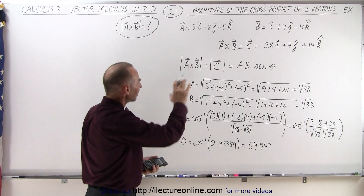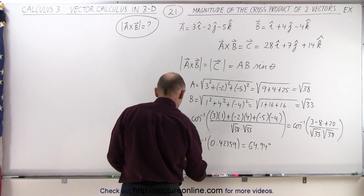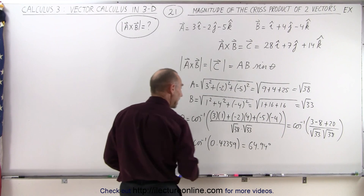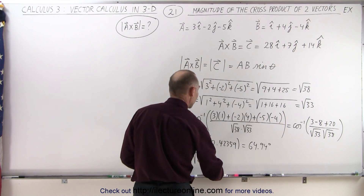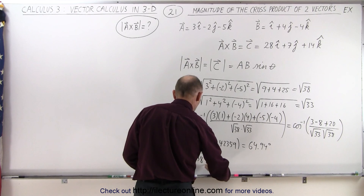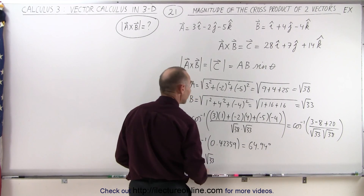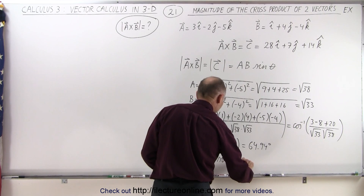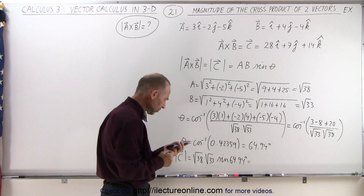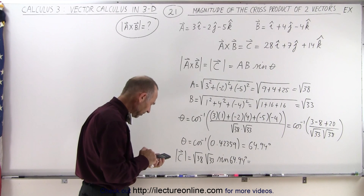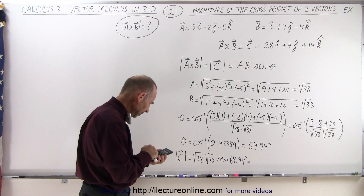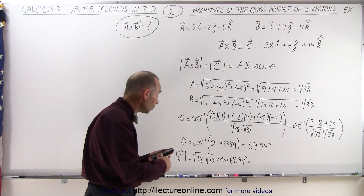Now we're able to calculate the magnitude of the cross product c. That gives us the square root of 38 times the square root of 33 times the sine of 64.94 degrees. Taking the sine of that angle and multiplying by the square root of 38 times the square root of 33 gives us 32.08.